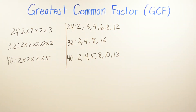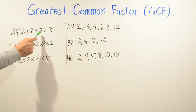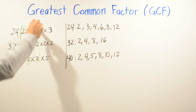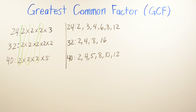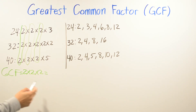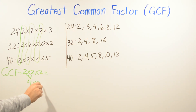Now we're doing three numbers: 24, 32, and 40. Using prime factorization: 24 is 2 times 2 times 2 times 3, 32 is 2 times 2 times 2 times 2 times 2, and 40 is 2 times 2 times 2 times 5. We look at what's common across all three rows. Each number shares three 2s, but nothing beyond that. So the GCF is 2 times 2 times 2, which equals 8.